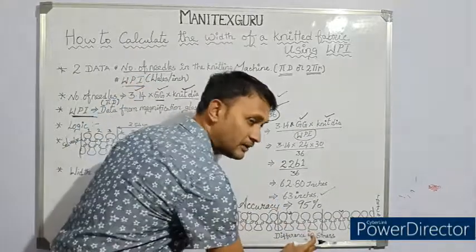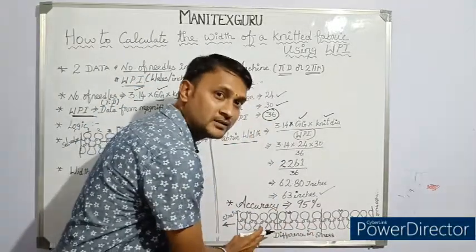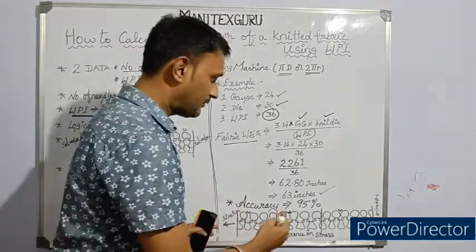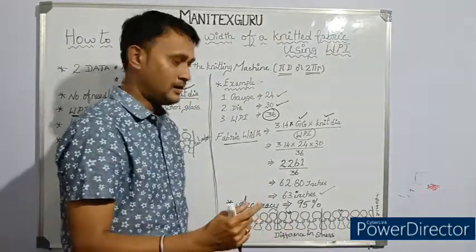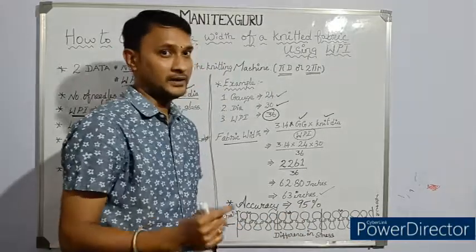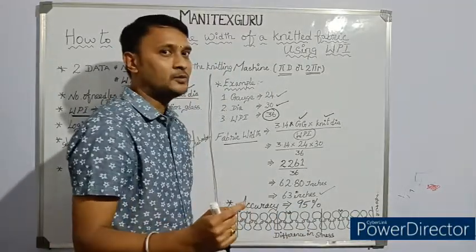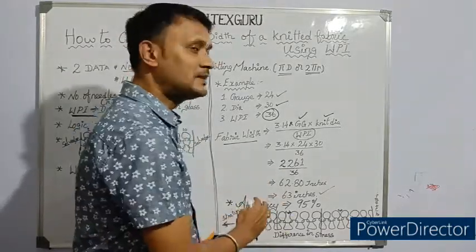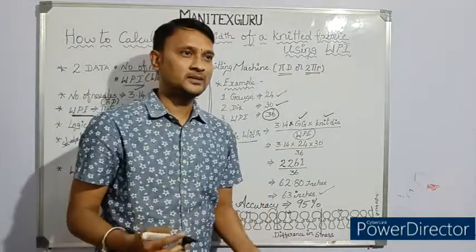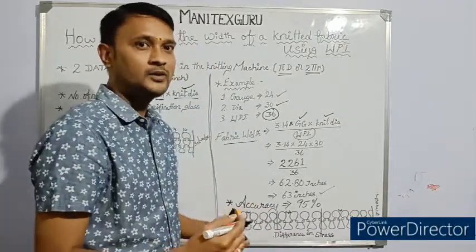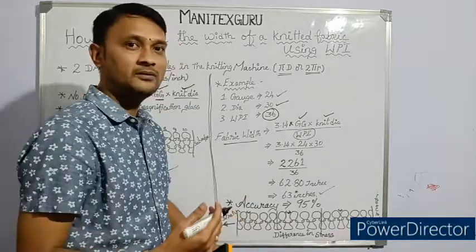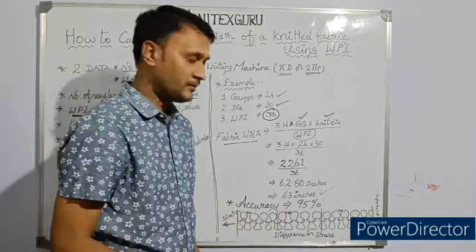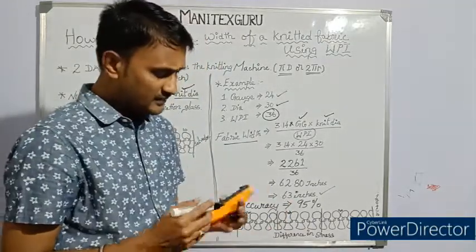If we check the wales per inch in the middle of the fabric and if we check the wales per inch in the selvedges, there will be a slight difference. Just because of this slight difference in the wales per inch, the results will vary. So I cannot give 100% accuracy for this methodology. But we can use this methodology for costing purposes, or in exceptional cases where we need to understand what is the width of the fabric, we can apply this methodology for calculating the fabric width.